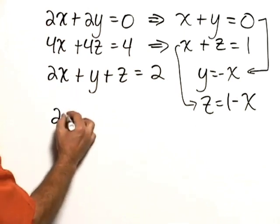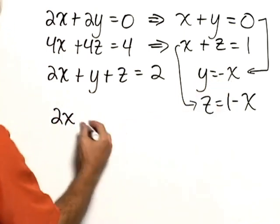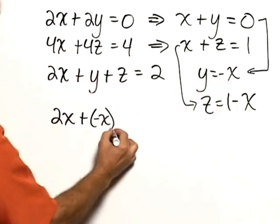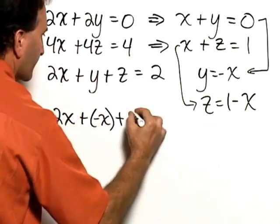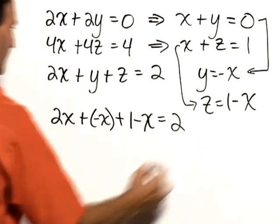I have 2x plus y. Y is negative x. Plus z. Z is 1 minus x. And that's equal to 2.